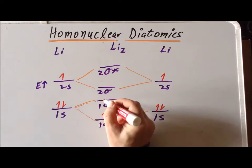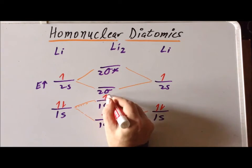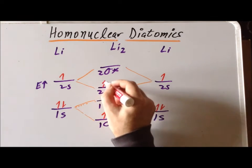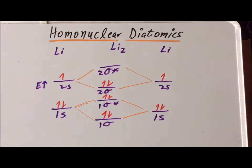The next two electrons go into 1 sigma star, and then the last two electrons go into 2 sigma. That accounts for all six electrons.